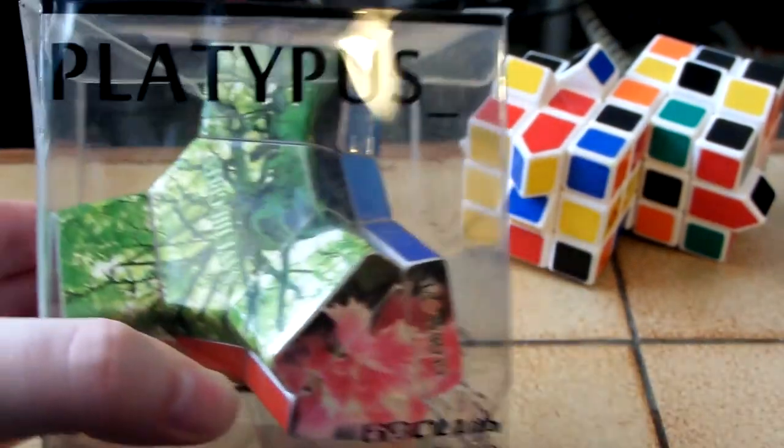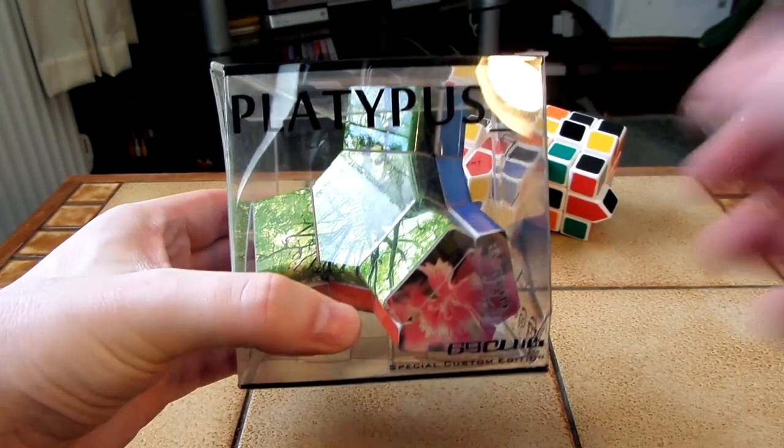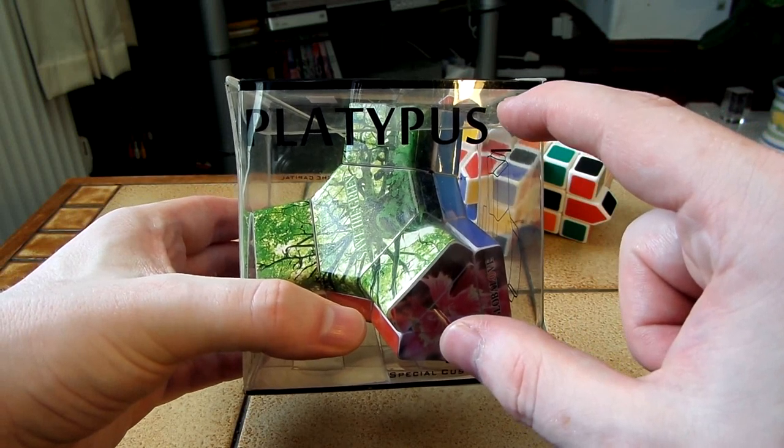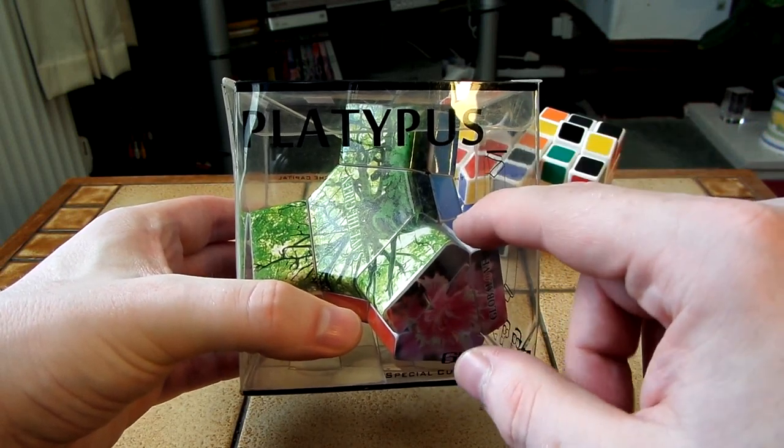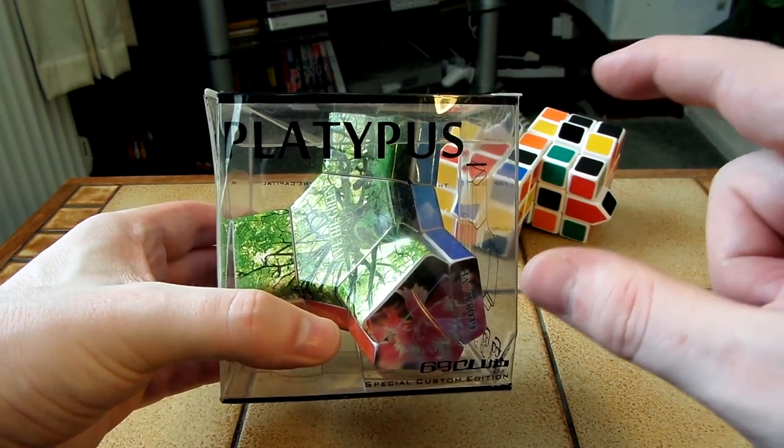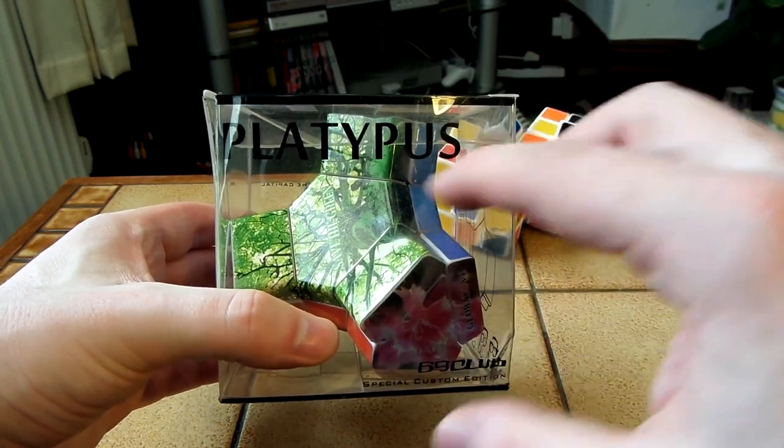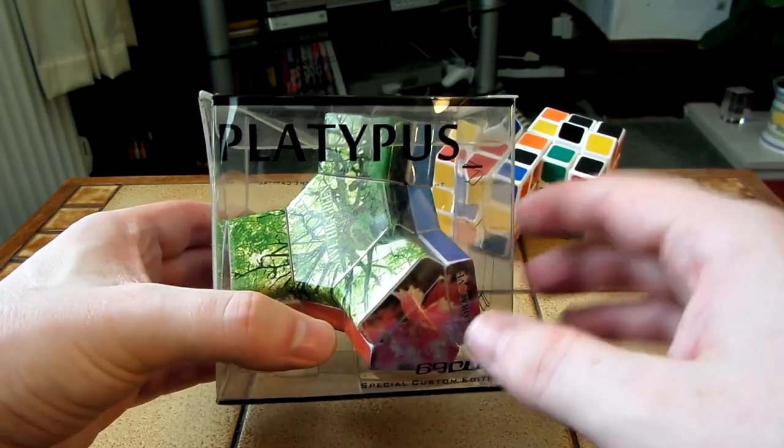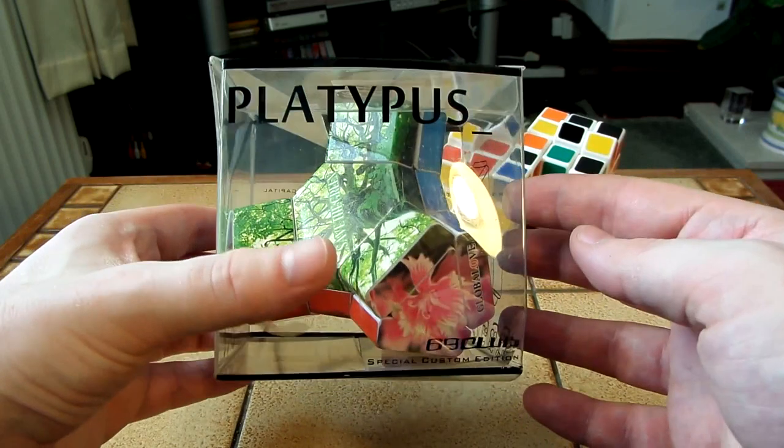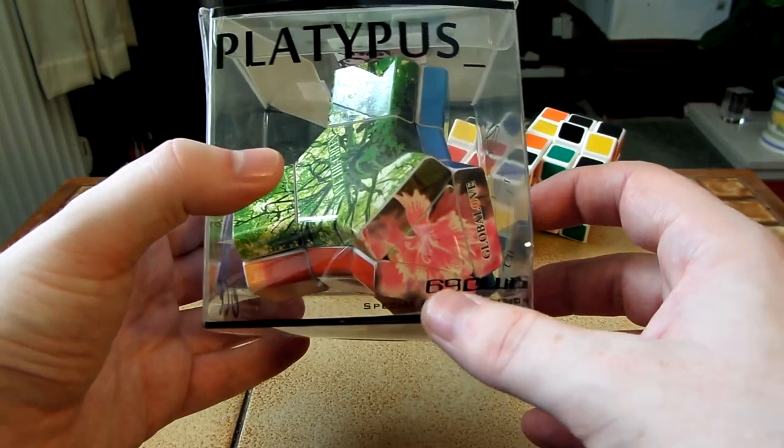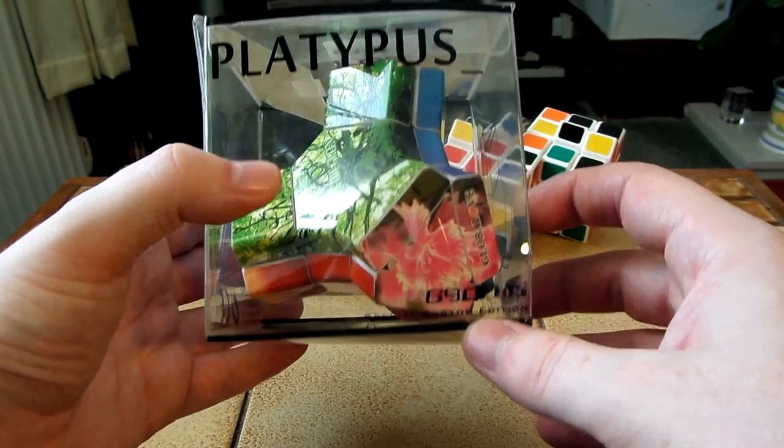So let's take a look at this platypus. Now, platypus puzzles, they've usually got like, I don't know what you call them. You know, like the symbols that you get on cards, like diamonds and aces and clubs and whatever. That's what is usually on these platypus puzzles, but this is different, as you can see. Kind of a hippy themed one. 69 Club Special Custom Edition.